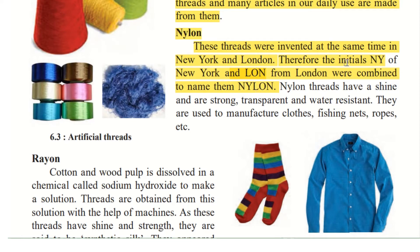Nylon threads have a shine and are strong, transparent, and water resistant. They can shine; they are strong and transparent. Color is added later on, but when first made, they are transparent and water resistant — that is, waterproof. They are used to manufacture clothes, fishing nets, ropes, and more.